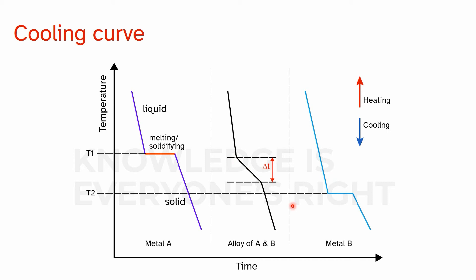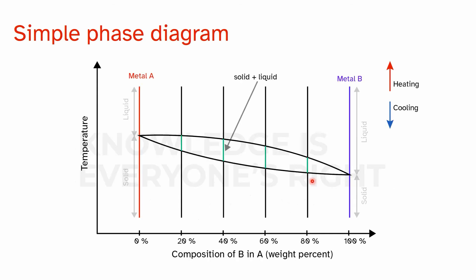Moving on to a simple phase diagram, we have metal A and metal B and their alloys. On the left side we have pure metal A and on the right side pure metal B. The x-axis shows composition of B in A by weight percent, so 20% means the alloy is 20% metal B and 80% metal A. Likewise, 40% metal B and 60% metal A is another alloy, and on each end we have a pure metal.